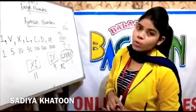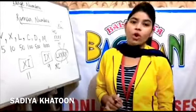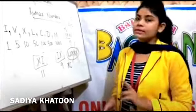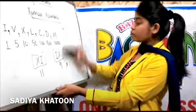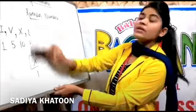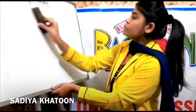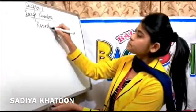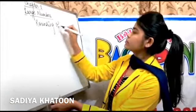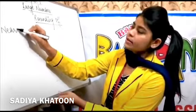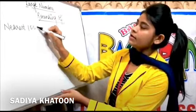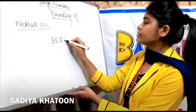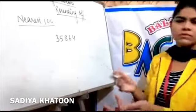Our last topic is rounding off numbers — rounding off to nearest 10, nearest 100, and nearest 1000. There are some rules you need to remember and then it will be very easy. Let's come to rounding off to nearest 100. Suppose I take the example 35,864.